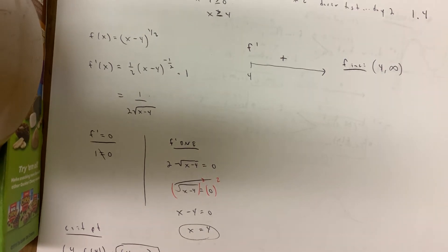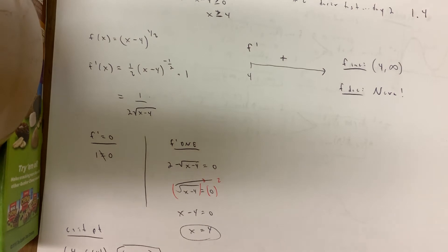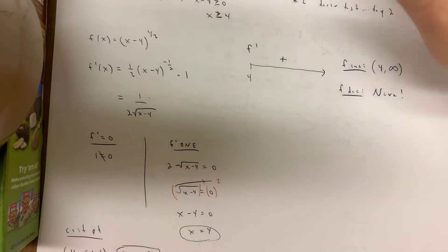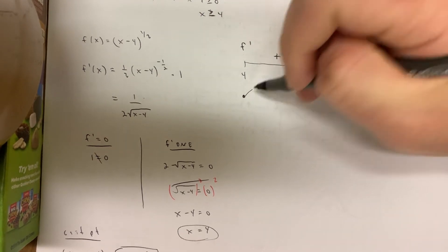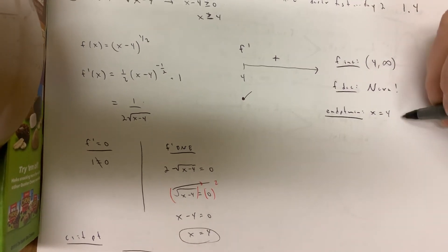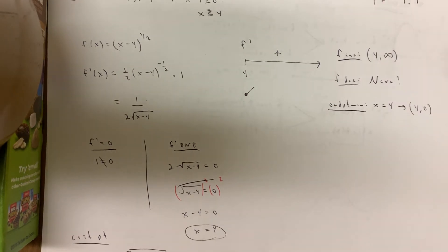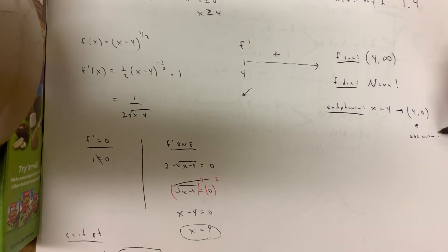There can't be relative extrema since the function never changes from increasing to decreasing or vice versa. But there is an endpoint at x = 4, and after x = 4 f prime is positive — f increases right away — making this an endpoint minimum. It occurs at the critical point (4, 0). Since it's the only min and the function increases thereafter, it's also the absolute minimum.